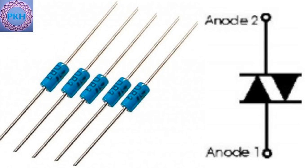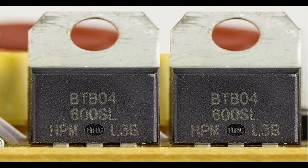No gate terminal: unlike a TRIAC or SCR, a DIAC has no gate terminal, which means it cannot be externally triggered. It simply switches into conduction automatically when the voltage across its terminals exceeds the breakdown voltage.